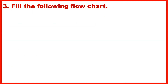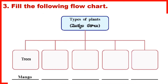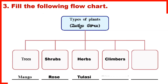Section 3: Fill in the following flow chart. Trees – Mango; Shrubs – Rose; Herbs – Tulsi; Climbers – Bitter Gourd; Creepers – Pumpkin.